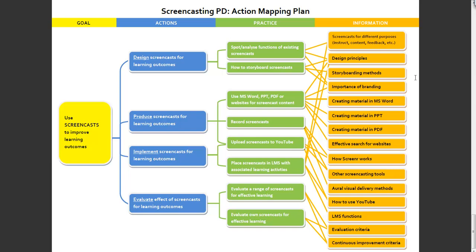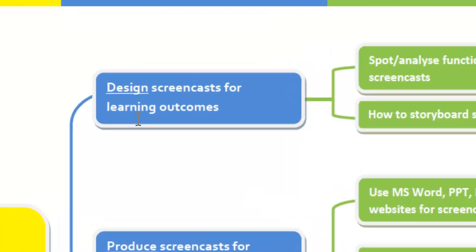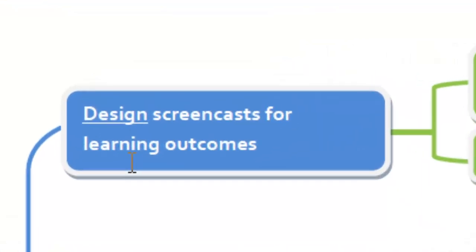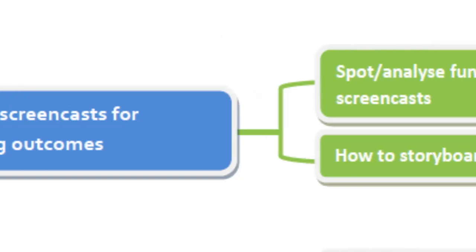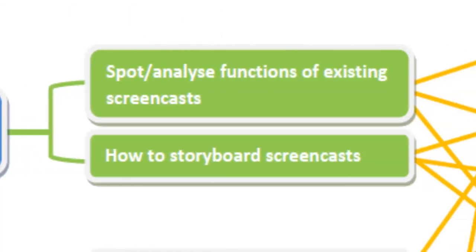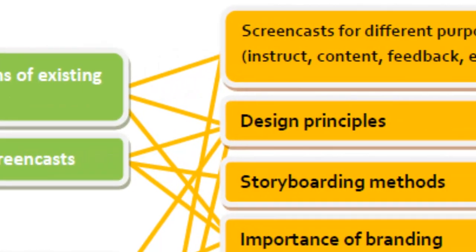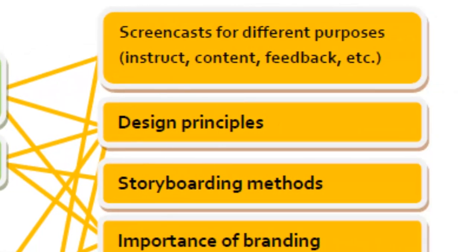Other things, like working out how a particular screencasting tool works, were areas where they definitely needed information. Based on this broad action mapping plan, I could then target each of the broad actions as a new, focused action map plan - for example, focusing on designing screencasts as the goal, then creating a series of actions around that goal, practice activities to simulate and develop that skill, and whichever information sources were going to be necessary for each of those.